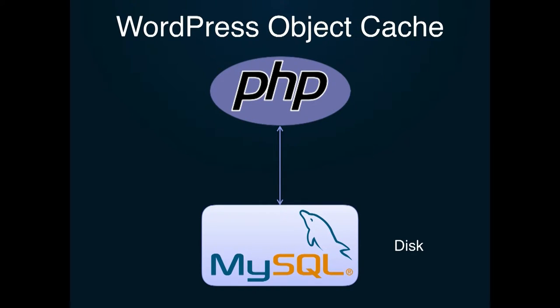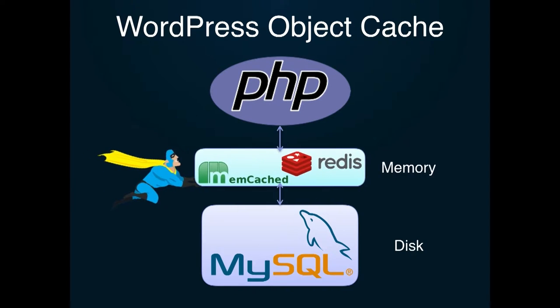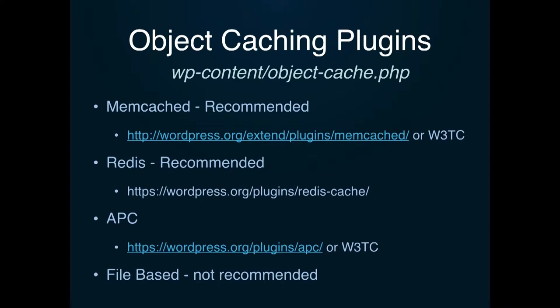Normally PHP is talking to MySQL directly, which is disk-based and slow. But if you have an object cache configured, you can be caching a lot of those queries and requests in memory, which is so much faster. The object caching plugins I recommend are Memcache and Redis, because they're memory-based and if you scale out to multiple servers, they can share the same cache. If you try to do file-based caching or APC, file-based is sometimes slower than not using one at all — so I highly recommend against that.